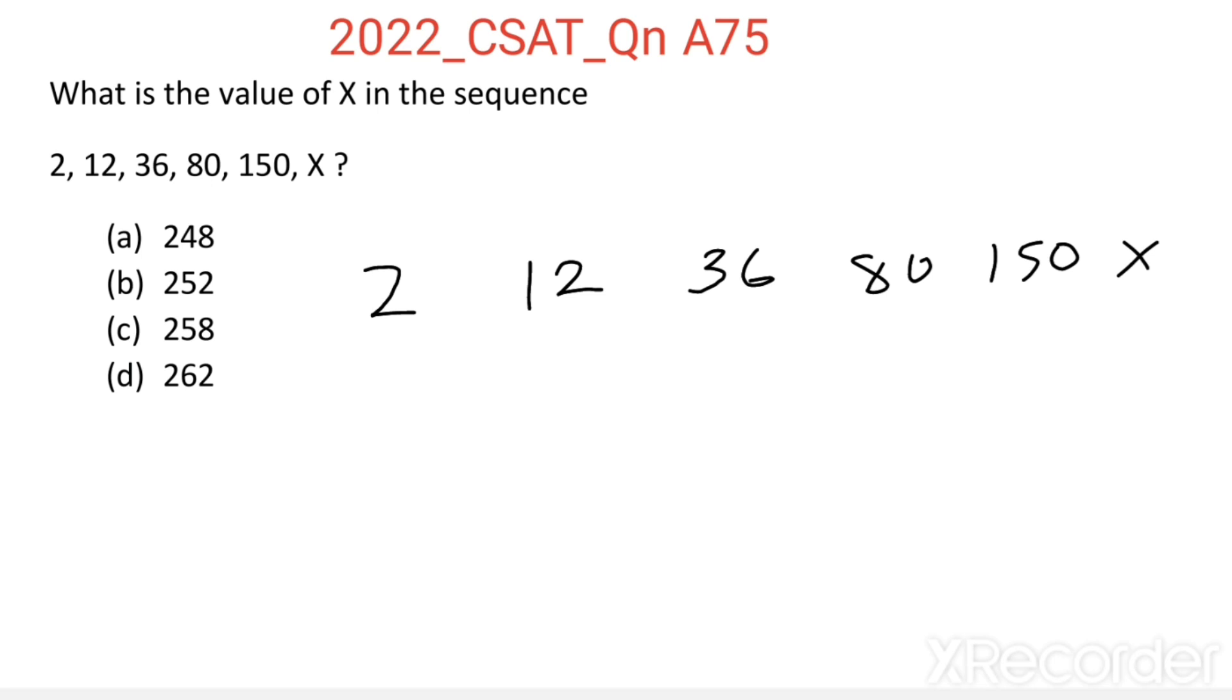First, to find the difference between adjacent terms: 12 minus 2 is 10, 36 minus 12 is 24, 80 minus 36 is 44, 150 minus 80 is 70. Then X minus 150, we don't know. We have to find the value of X.